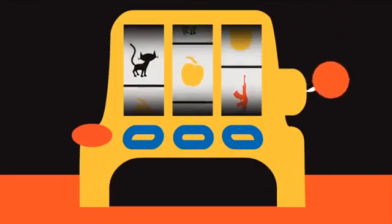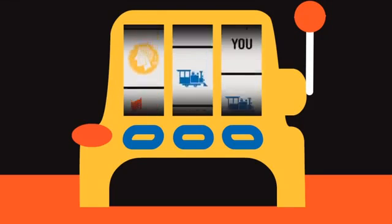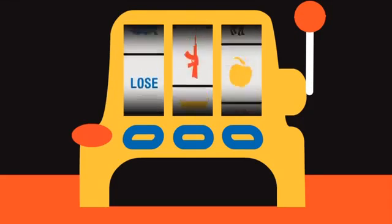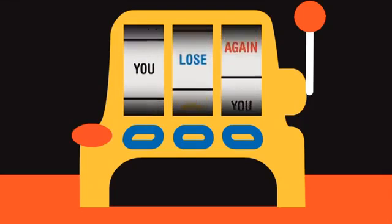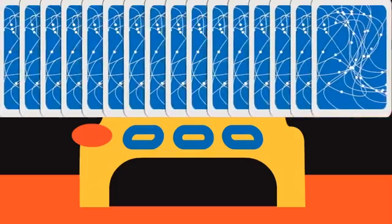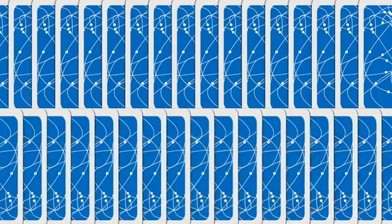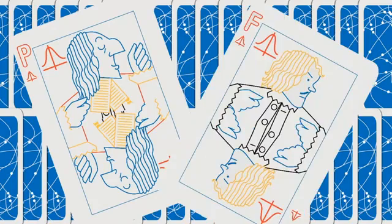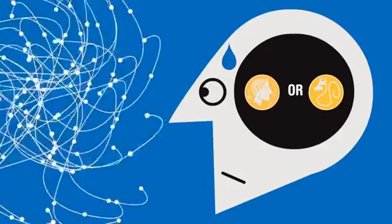This is called the gambler's fallacy: our assumption that probability changes depending on past results. And this may explain why casinos make so much money. It's all a matter of probability, one of the more complicated forms of logic. In fact, it's so complicated there was only a few centuries ago that some smart French chaps by the names of Pascal and Fermat worked out much of the mathematics behind it.